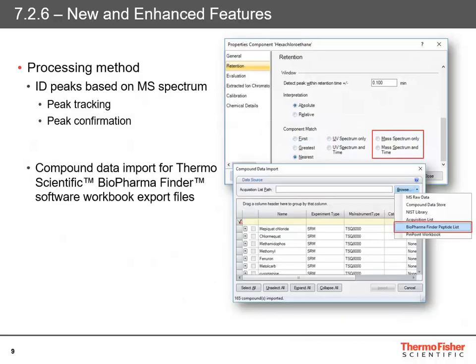You can also import data directly from Thermo Scientific Biopharma Finder. When you've built up your peptide list in Biopharma Finder, you can now import that directly into Chromelion to build up your processing method, complete with all of the transitions and everything you need to make that work straight away.